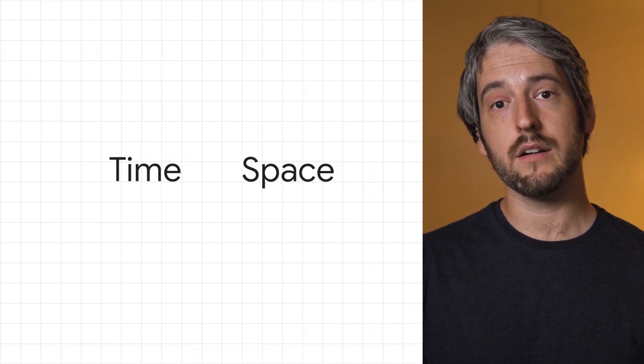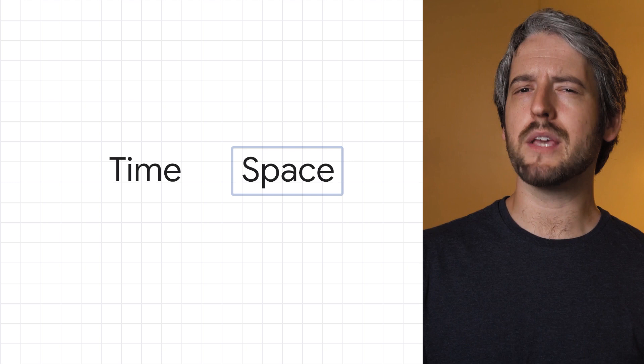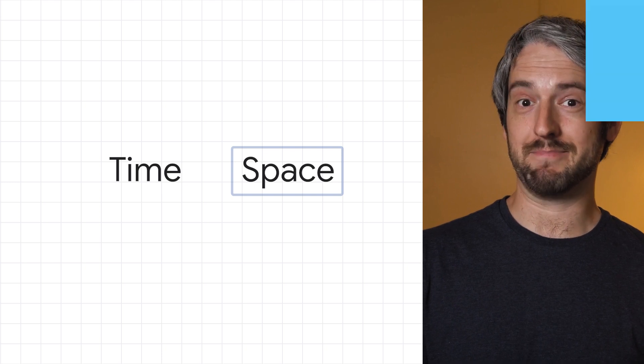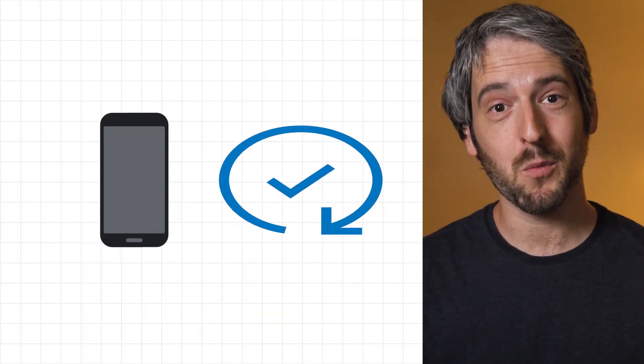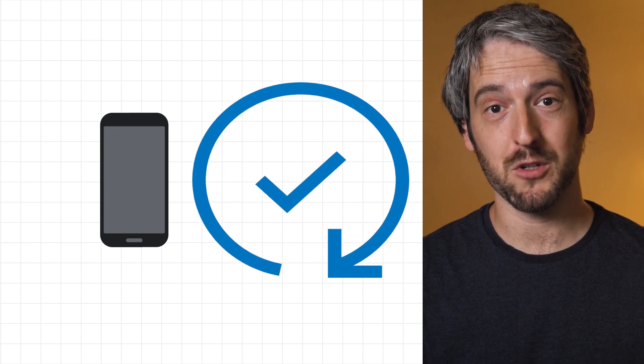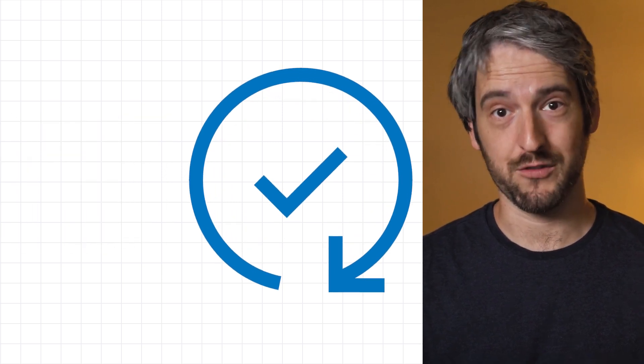So those were time-related performance issues. What about the space-related ones? Your app might be too big, which is a problem when it doesn't fit on your user's phones or when it's too big of a download for them. Your app can also take too much memory, or it can leak memory, which means you are unwittingly keeping some memory you don't need anymore forever.